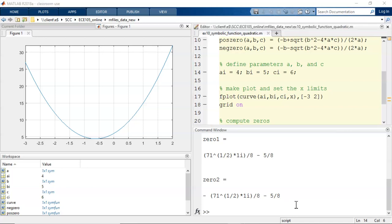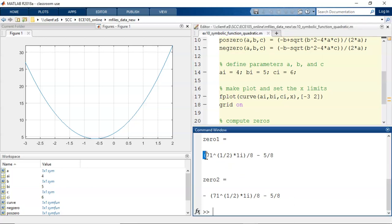The final thing to notice is how strange the zeros appear in the command window. First of all, these are complex numbers, which is why the imaginary i is present. Secondly, MATLAB works very hard to leave these as exact representations and not as a floating point number with a rounding error.